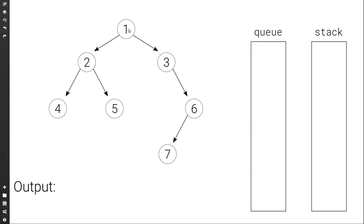To reverse the output, we will use a stack. As we visit the nodes, instead of printing them, we will add them to the stack. Then when the queue is empty, we will simply pop everything from the stack and print it.